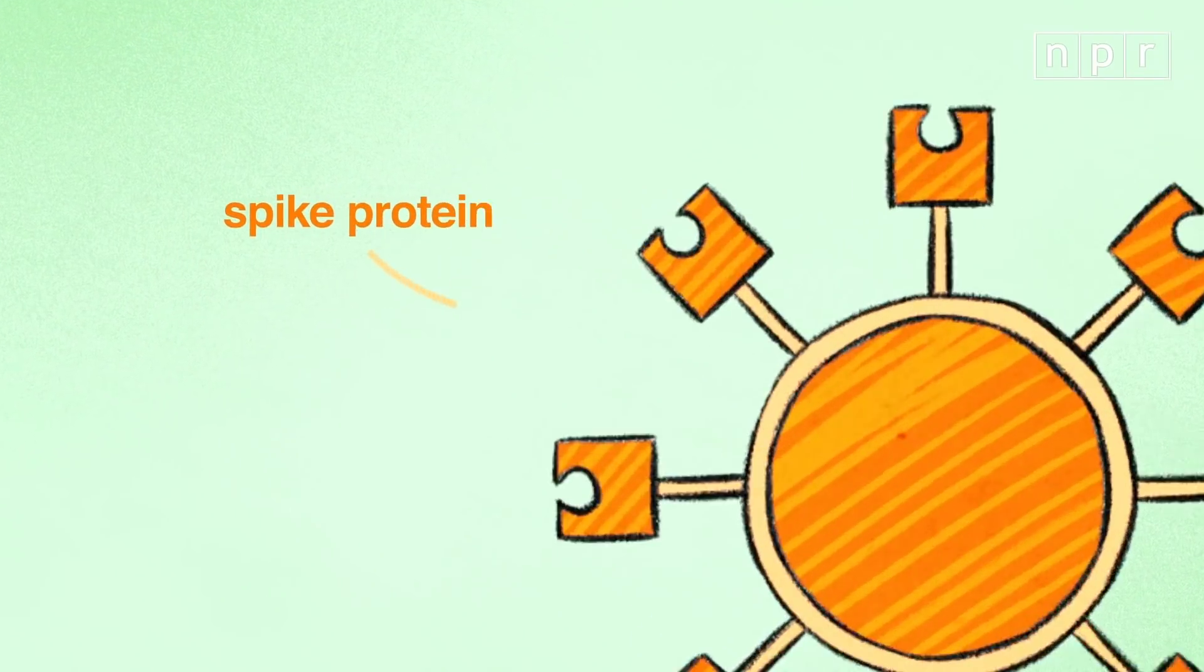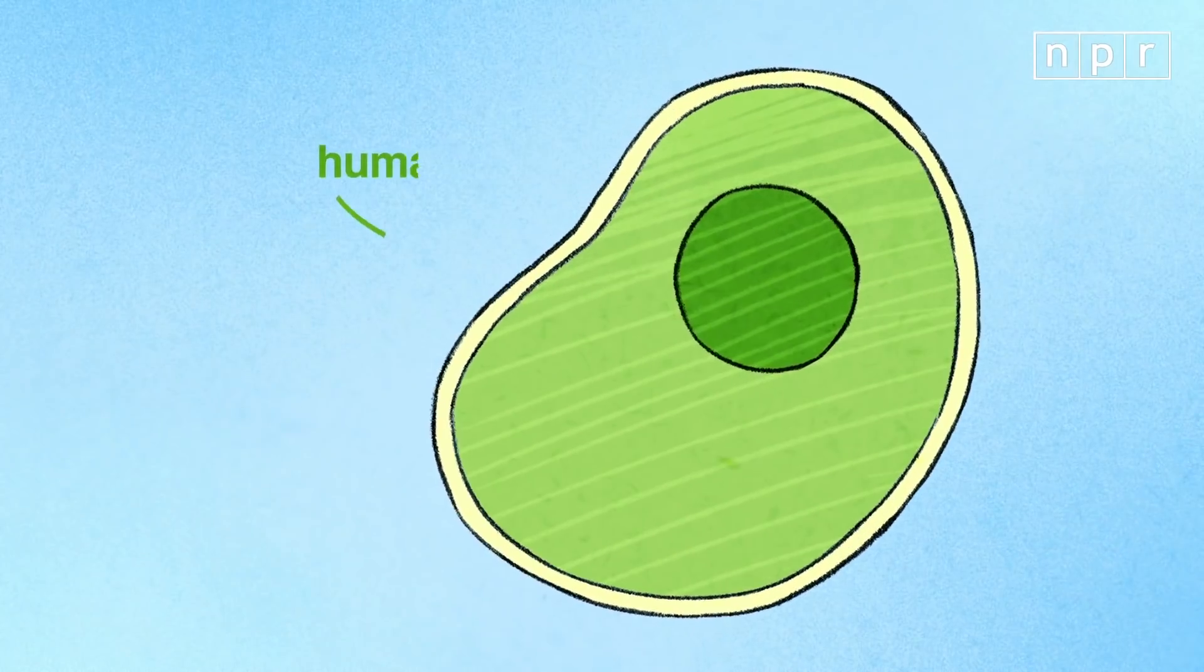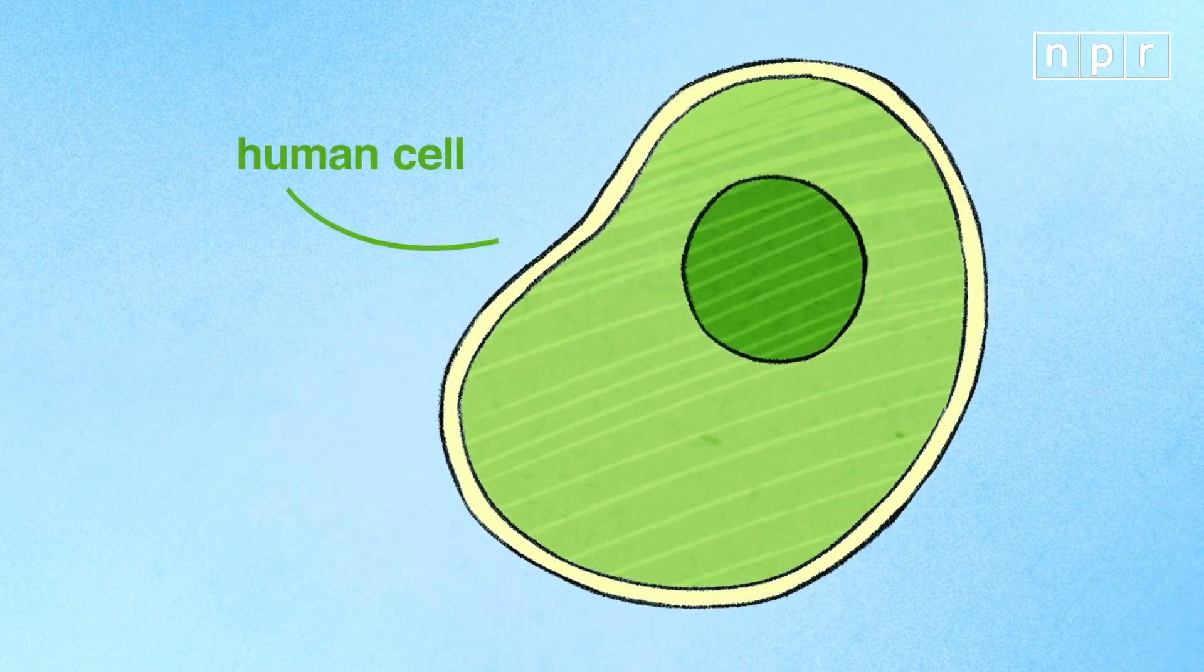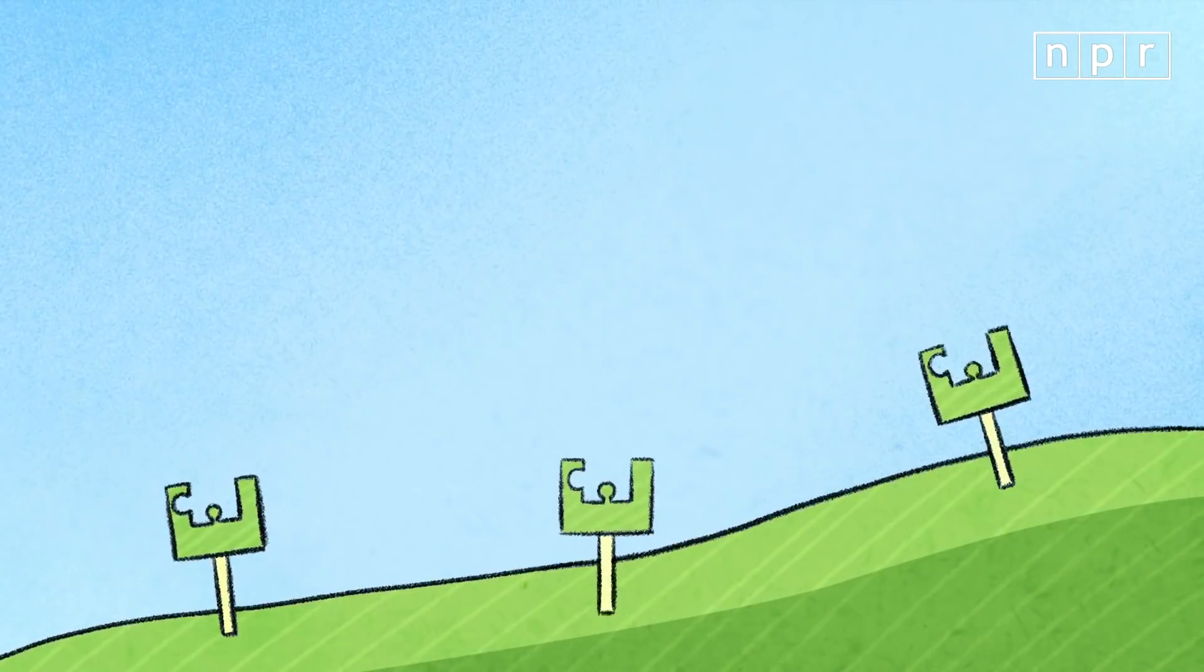The virus is basically a ball with little spikes on the surface poking out. Now our cells aren't stupid. They don't let just any virus inside willy-nilly. The cell goes to great lengths to keep intruders out.